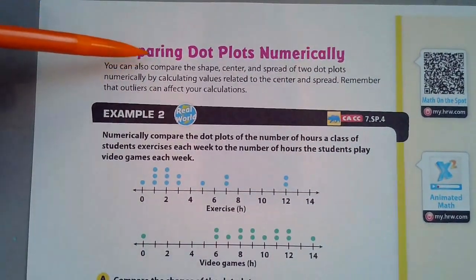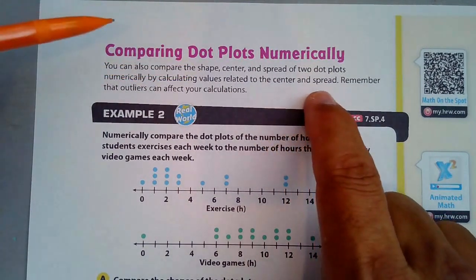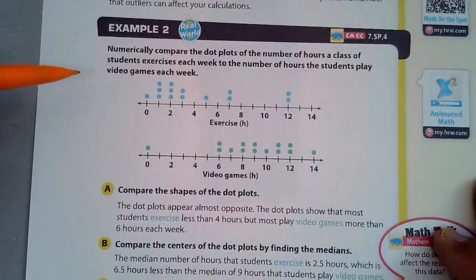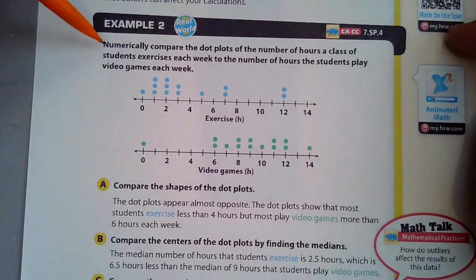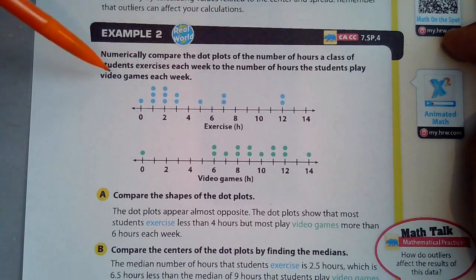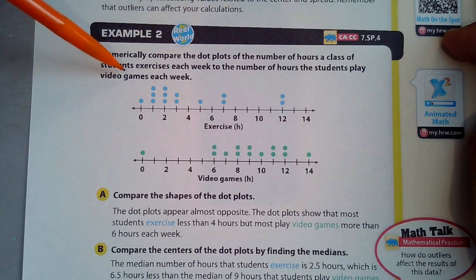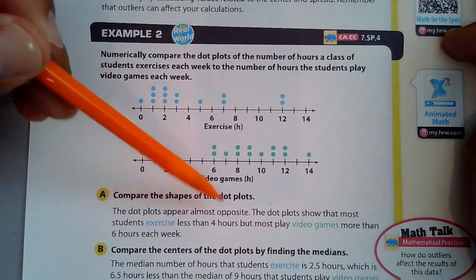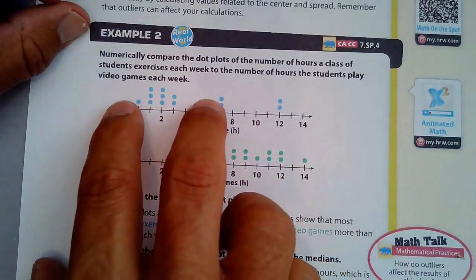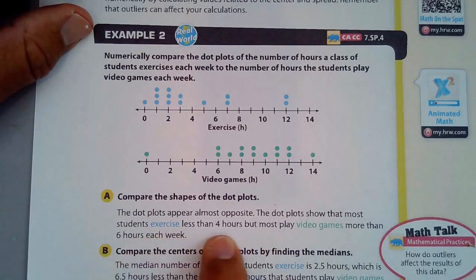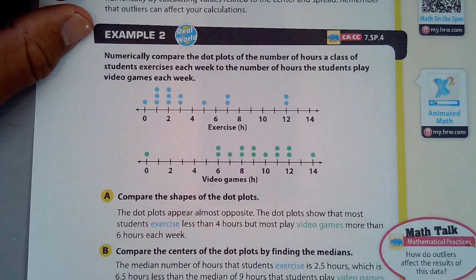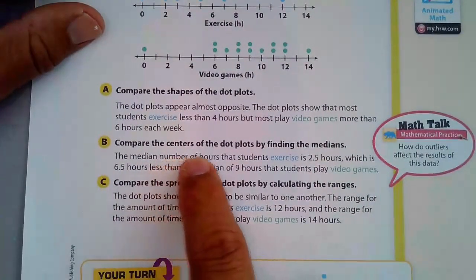Next, we are going to compare dot plots numerically. You can also compare the shape, center, and spread of two dot plots numerically by calculating values related to the center and spread. Remember that outliers can affect your calculations. Numerically, compare the dot plots of the number of hours a class of students exercise each week to the number of hours students play video games each week. Exercise, got it? Video games. Compare the shapes. The dot plots appear almost opposite. Yeah. This is high here, and it's high at this point right here. The dot plots show that most students exercise less than four hours, but most play video games more than six hours.